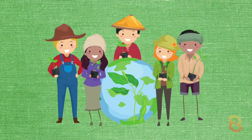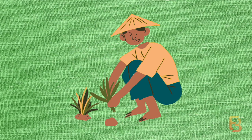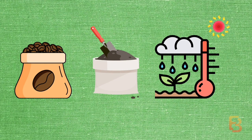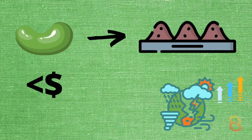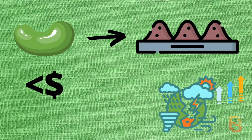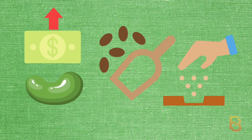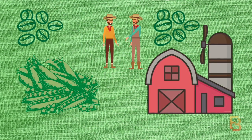Beanstalk maintains the peg by relying on its decentralized community: depositors (Silo members), lenders (Bean Farmers), and arbitrageurs. At the beginning of each Season, it evaluates the oracle price and debt level, then dynamically adjusts the Bean supply, Soil supply, and Weather (the interest rate). When the Bean price is below a dollar, it increases Soil supply and raises the Weather to incentivize debt issuance, bringing Bean back to its peg. When the Bean price is too high, it mints new Beans and lowers the Weather.